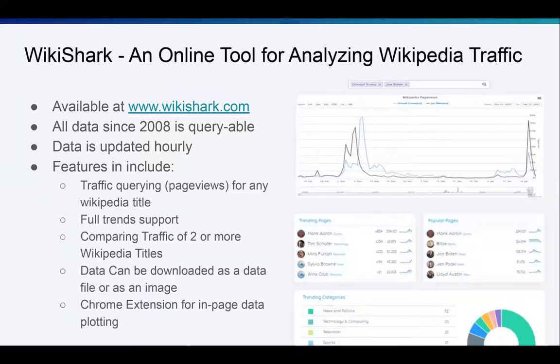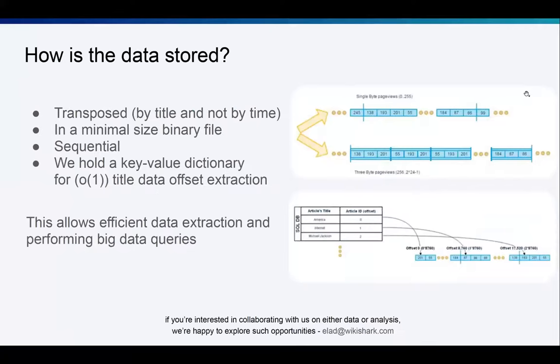WikiShark is an online tool that's easy to use. It's hourly updated. It allows querying all of the traffic data back to 2008. It also enables searching and comparing unlimited titles, view charts, and export the results as data files or image files. There is also a browser extension that let you see the traffic directly on Wikipedia. And we also developed a trend engine, surfacing new trends and hot topics. In the next slide, I will briefly explain how the data is stored. So after downloading all of the data dumps, we discovered that over 90% of the titles had never more than 255 page views within an hour. So for those 90%, we saved that in an efficient binary way, which means only one byte per hour. And for the rest, we used only three bytes per hour. Moreover, the data was saved in a sequence, and it allowed much less disk access requests. And so a query to the whole data since 2008, which means about 13 years, takes only a few milliseconds. And this way, it allows us to run big data queries on the page views data. Finally, if you are interested in collaborating with us on either data or analysis, we are happy to explore such opportunities. If you want to learn more, come to meet us. We are at room number four. Thank you very much.